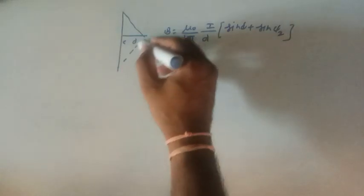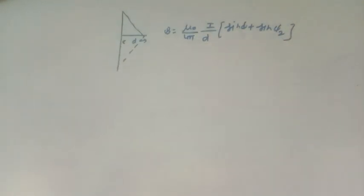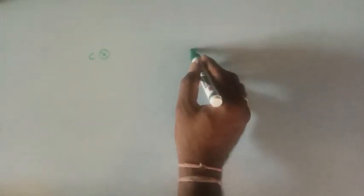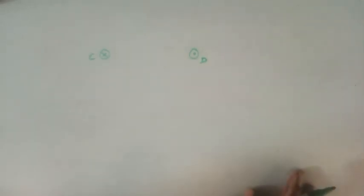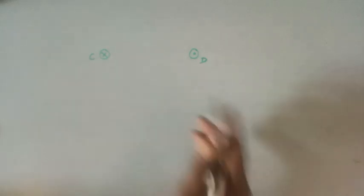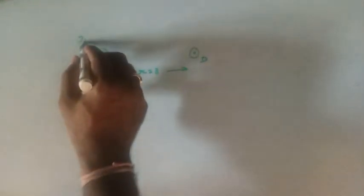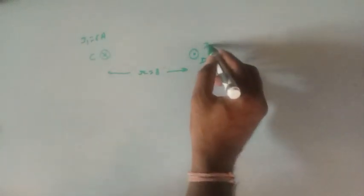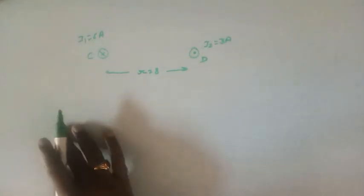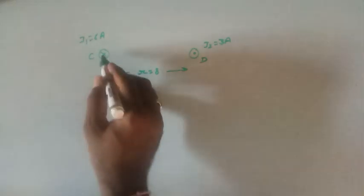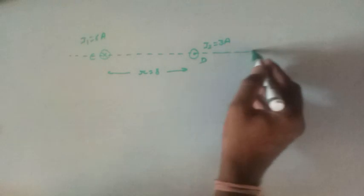Now we discuss some numericals. First numerical: we have a current-carrying conductor C in which current is flowing in the inward direction perpendicular to the plane, and another conductor D in which current is flowing in the outward direction perpendicular to the plane. These conductors are separated by a distance of 8 cm. The current through conductor C is i₁ = 6 A and through conductor D is i₂ = 3 A. We need to find the point on the line joining them at which the magnetic field is zero.